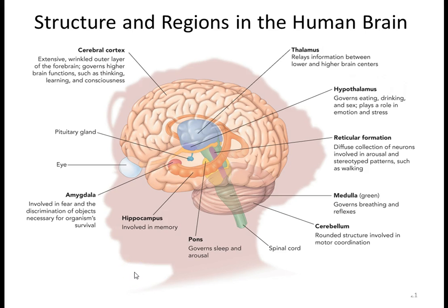Here's a diagram of the different regions of the brain. The cerebral cortex is the extensive, wrinkled outer layer governing higher brain functions such as thinking, learning, and consciousness. The thalamus relays information between lower and higher brain centers. The hypothalamus governs eating, drinking, sex, emotion, and stress. The reticular formation (reticular activating system) is involved in arousal and stereotypical patterns like walking. The medulla governs breathing and reflexes, the cerebellum coordinates motor activity, and the pons governs sleep and arousal.